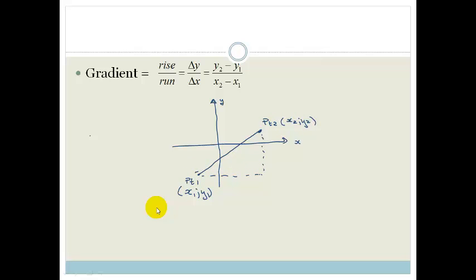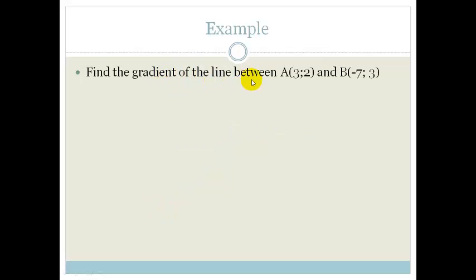So let's look at an example, just to make sure we know how to do this. It says, find the gradient of the line between A(3,2) and B(-7,3). So let's just roughly plot this so we know kind of where things are, so we can see what type of gradient we're expecting. A is (3,2). So if we go along 1, 2, 3, and up 2. That there is A. B is -7, so it's going to be along here and up there. So B is (-7,3).